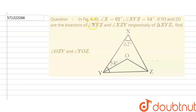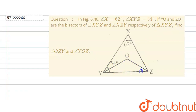The question says: in the figure, angle X is equal to 62 degrees and angle XYZ is equal to 54 degrees. If YO and ZO are the bisectors of angle XYZ and angle XZY respectively of triangle XYZ, find angle OZY and angle YOZ.